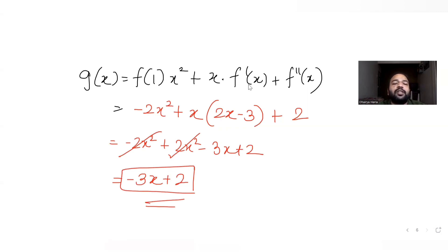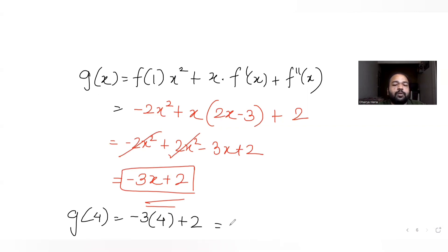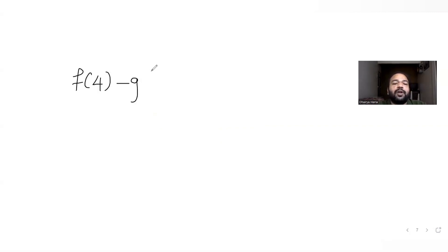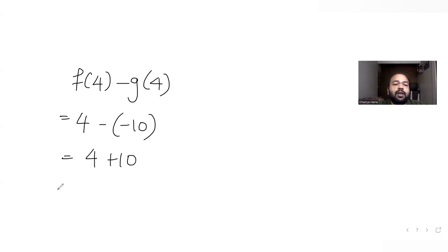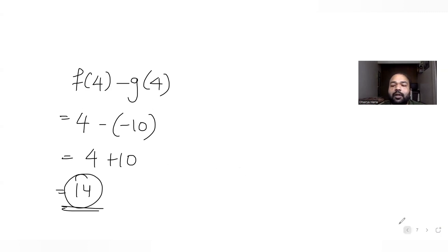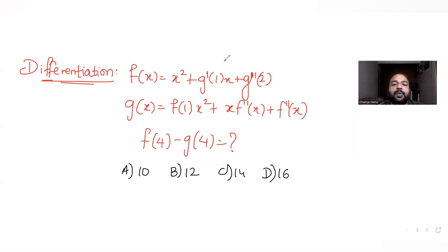With g(x) = −3x + 2, substituting x = 4: g(4) = −3×4 + 2 = −12 + 2 = −10. Now the difference f(4) − g(4) = 4 − (−10) = 14. So the answer is 14.